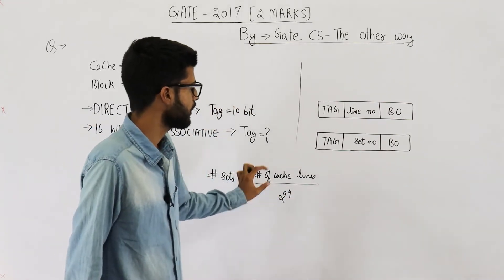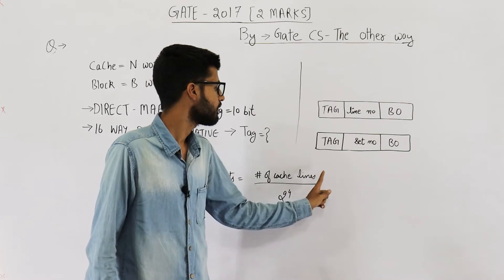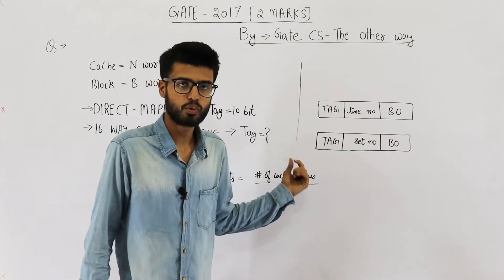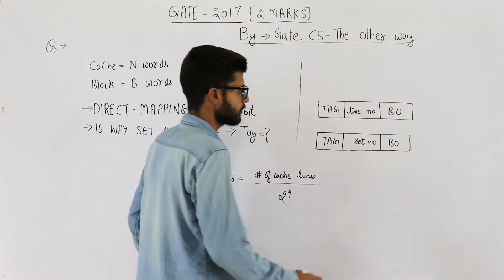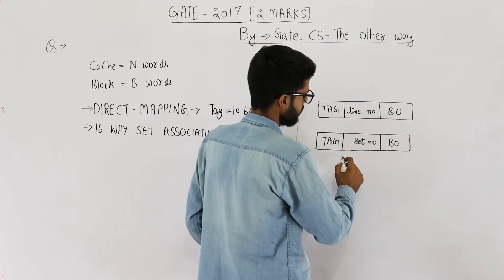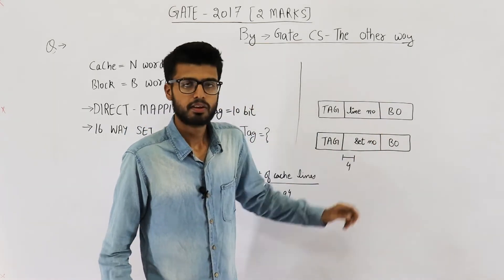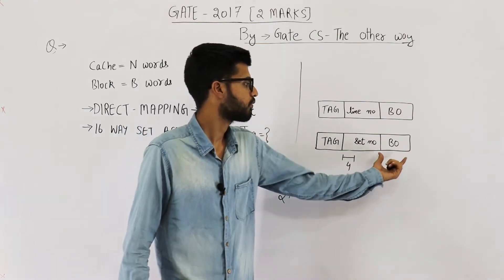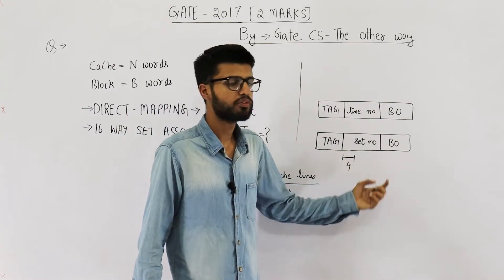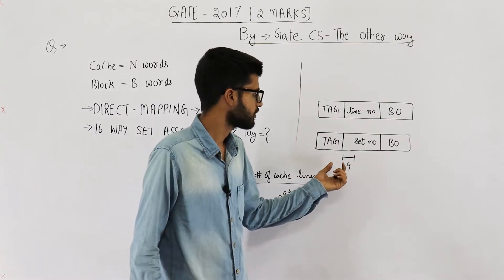The number of lines will be some power of 2. By dividing by 2⁴, we are subtracting 4 from that power of 2. So the number of bits needed to represent the set number shrinks by 4 bits compared to the line number. The block offset takes the same number of bits in both configurations.